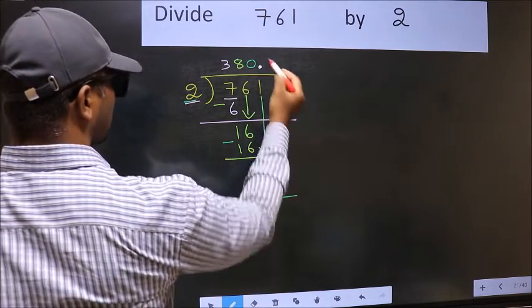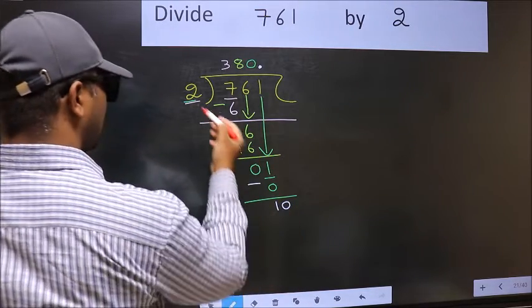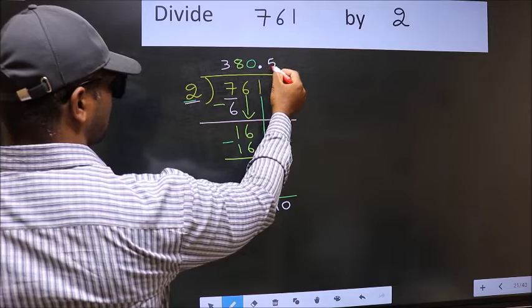So, now you can put a dot and take 0. So, 10. When do we get 10 in 2 table? 2 times 5 is 10.